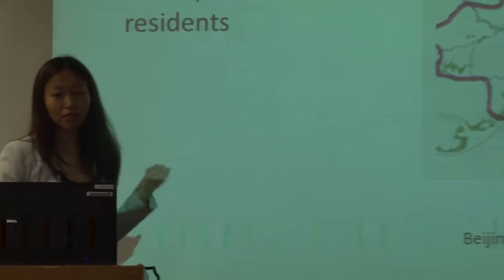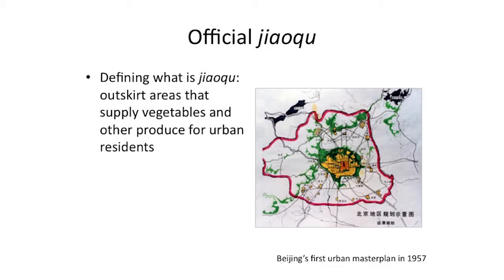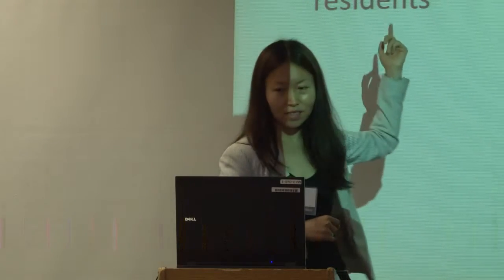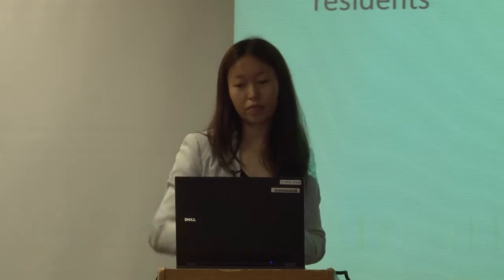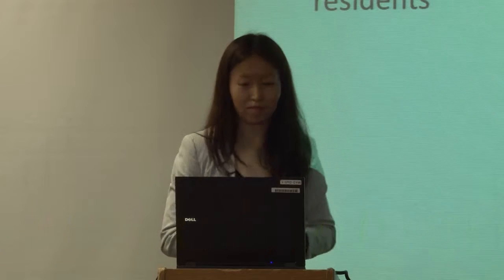Here's another different interpretation of what is a suburb, what is jiaoqi. I looked at the urban master plans of Beijing from the 1950s to today, the most current version. This is a map from 1957 — the first master plan after the founding of the People's Republic of China. There are five categories of jiaoqi, and this was the most common understanding in the 50s. According to the 1957 master plan, jiaoqi was basically outskirt areas that should supply vegetables and meat for urban residents — that's how the communist government understood jiaoqi in the 50s and 60s.